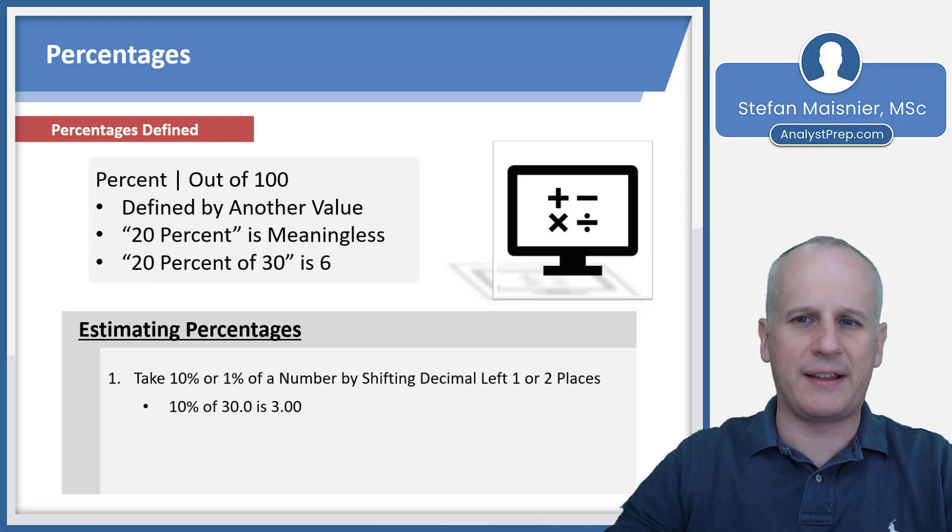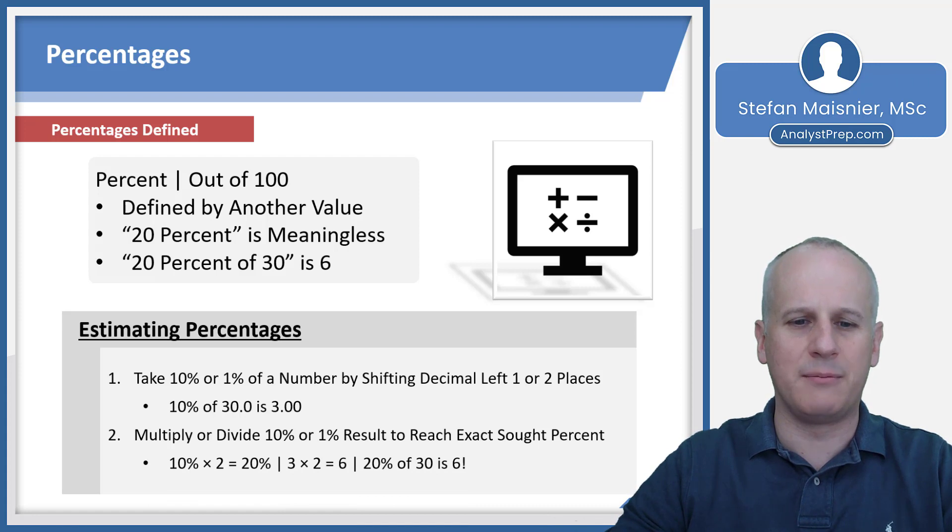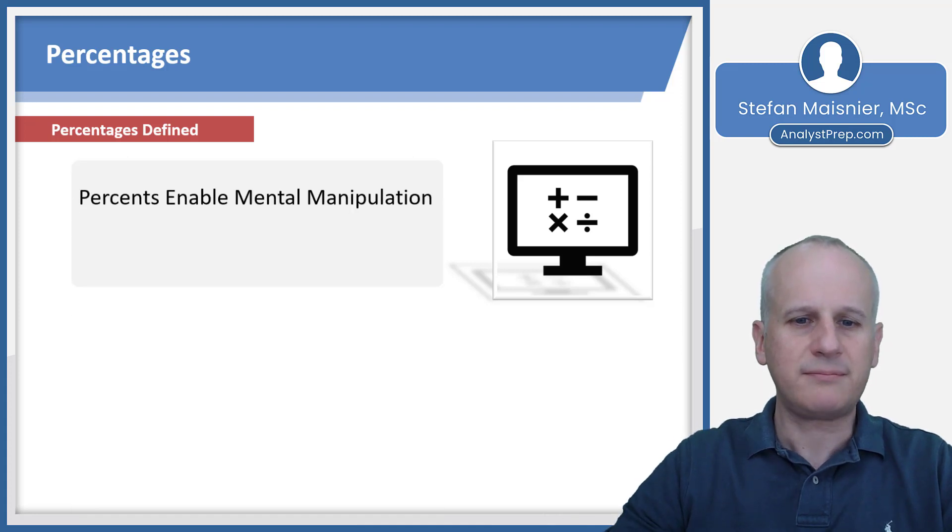Then you can multiply or divide your 10% or 1% result to reach your exact sought percentage. For instance, if we wanted to go from 10% of 30 to 20% of 30, we do 10% times 2 is 20%, and 3 times 2 would be 6. So therefore we know that 20% of 30 is 6.